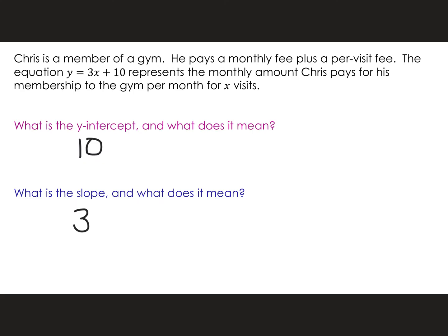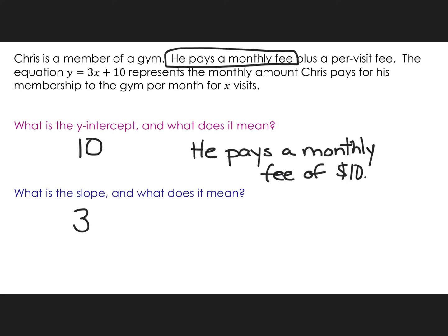Let's start with the 10. The 10 is the initial amount — it's right here: he pays a monthly fee. So 10 is our monthly fee — he pays a monthly fee of $10. What's the 3 stand for? That's how much money he pays per visit. How do I know it's a per-visit fee? Because it tells me right there: per-visit fee.